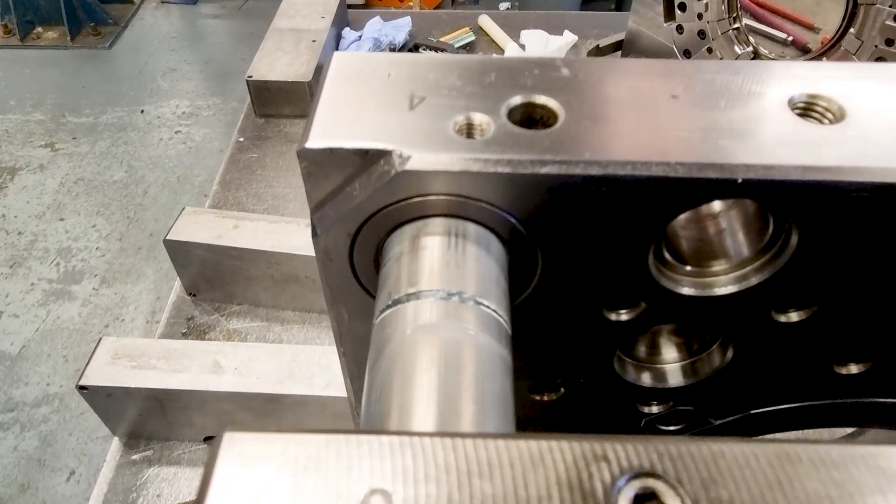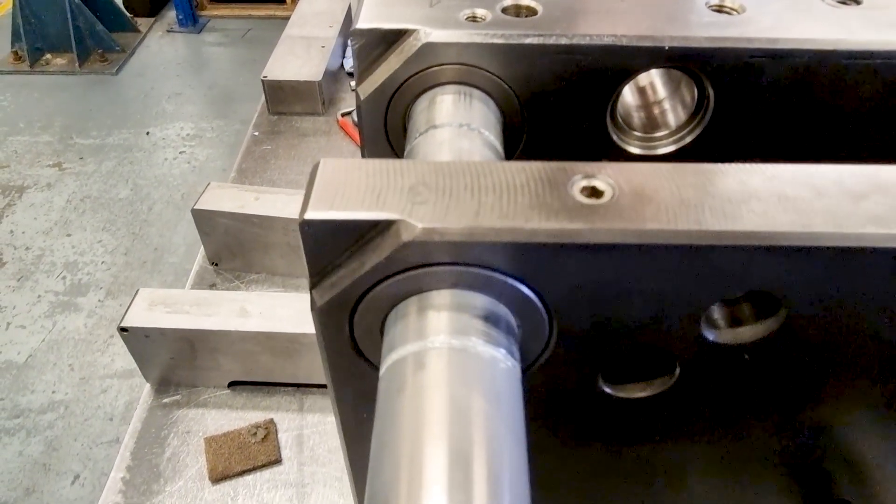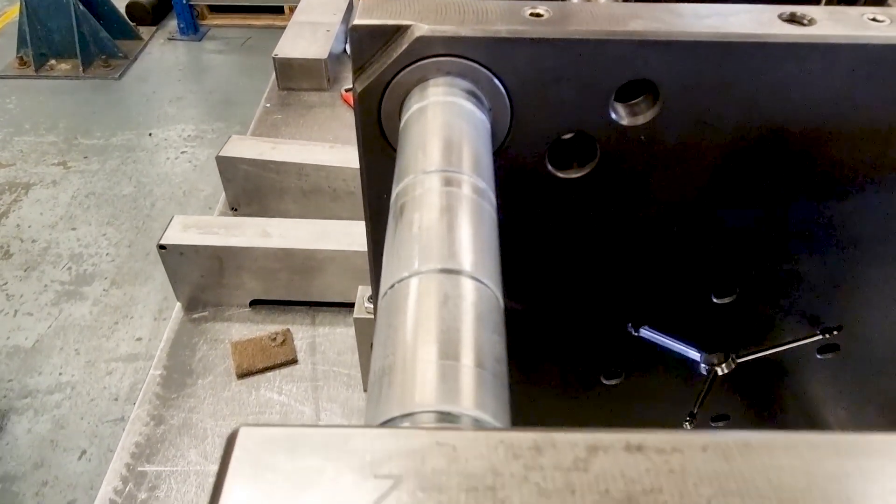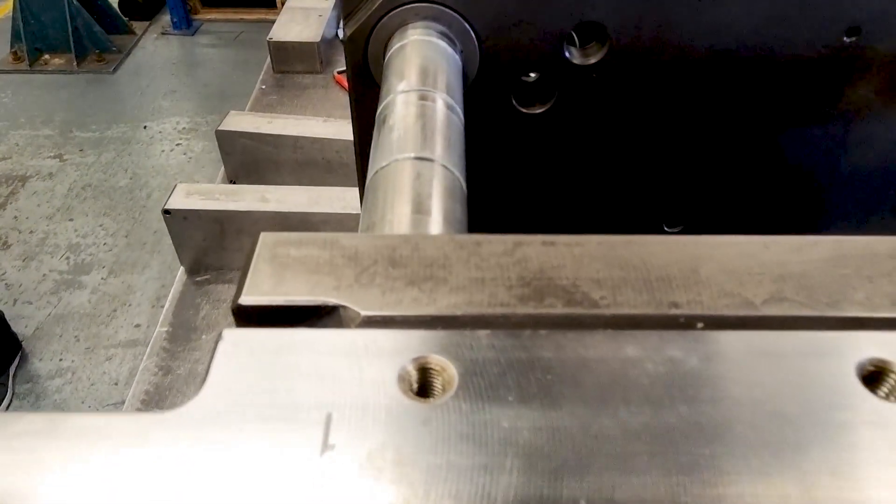The guide pillars are the pins present on the moving half of the tool that slide into the bushes on the fixed half. These ensure the two halves of the tool are aligned so that the part can form correctly.